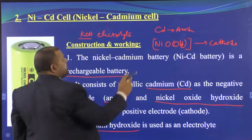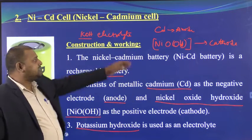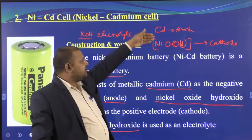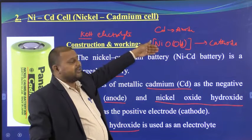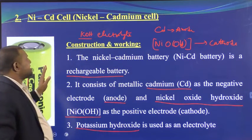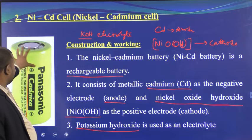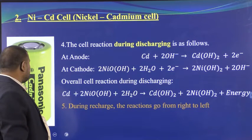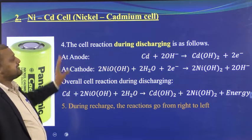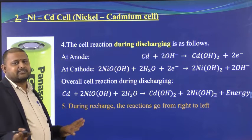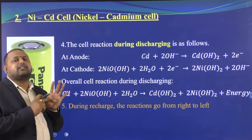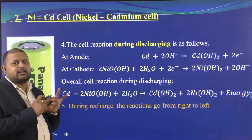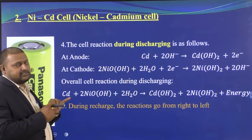So three points we know so far: the anode is cadmium, the cathode is nickel oxide hydroxide, and the electrolyte is potassium hydroxide. Now, the fourth point: the cell reactions. Every time we have to write three things — what is the cathode, what is the anode, what is the electrolyte — and the fourth is the cell reactions at anode, at cathode, and the overall reaction.